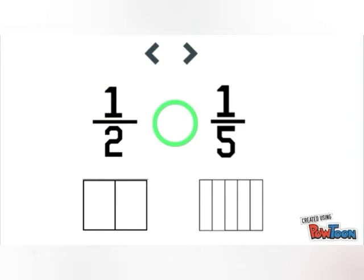Similarly, in 1 upon 5, we will shade 1 part of the fifth. Now observe carefully: one half is split into two equal parts and has greater amount shaded in, while one-fifth is split into five parts, so it has smaller amount shaded in.